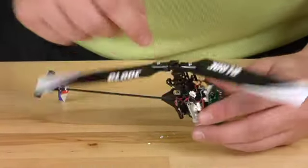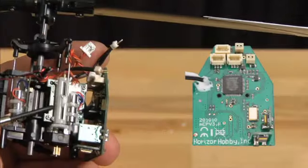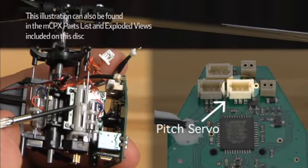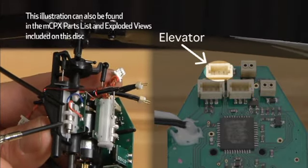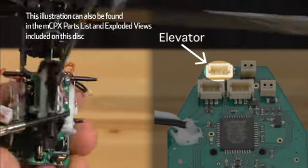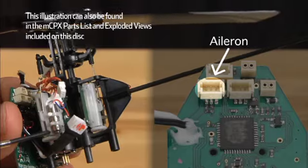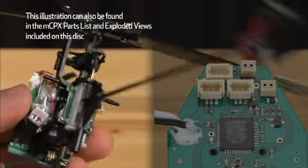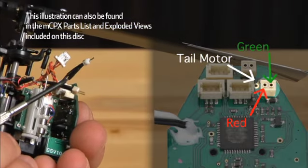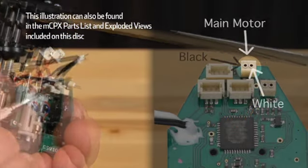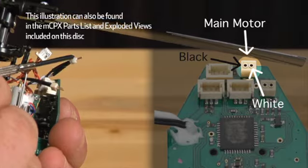We will now put the connections for all the wires back in. For this servo, the connection goes right here. For this servo, the connection goes right here. For the tail motor, this connection goes right there. This motor wire connection goes right here.